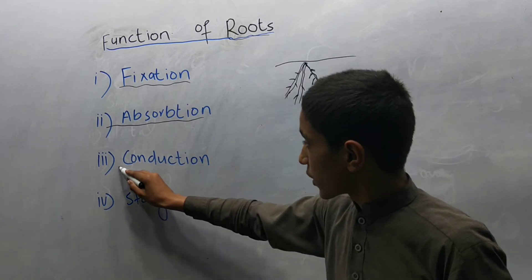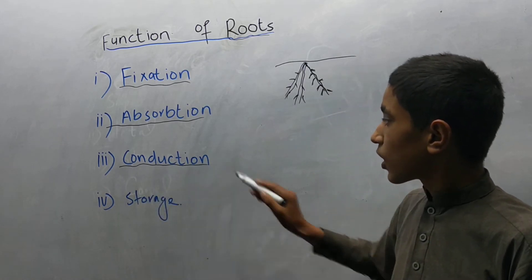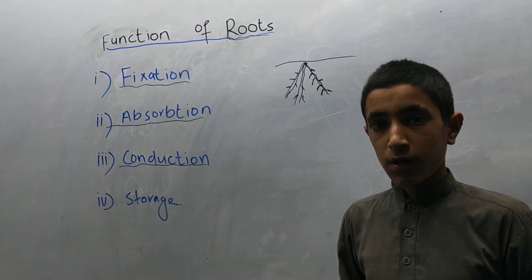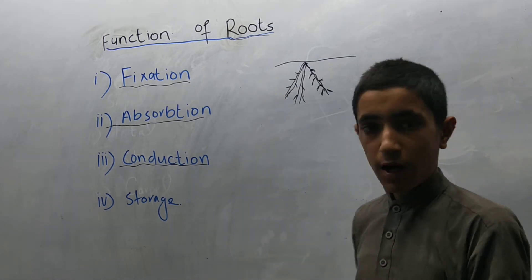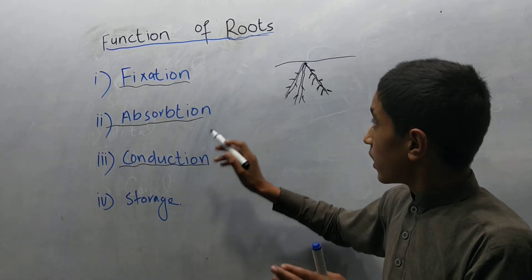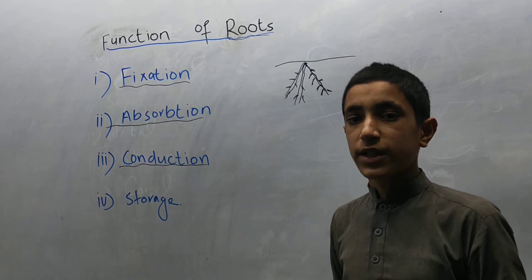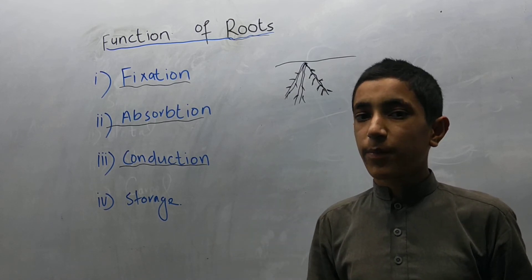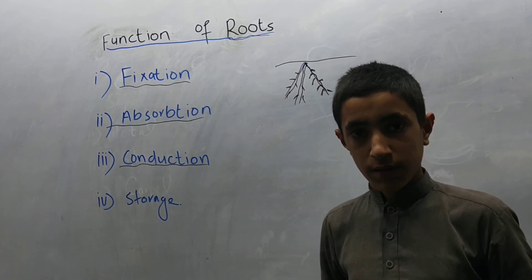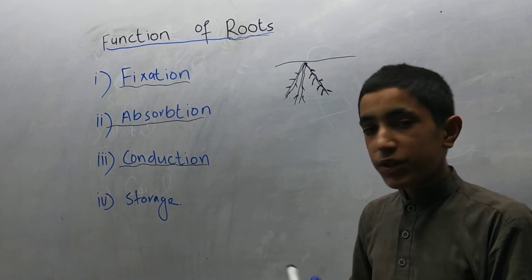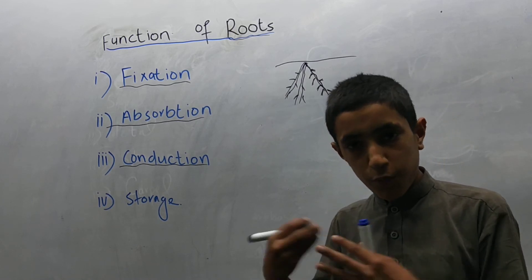The third function of the root is conduction. When a root absorbs water and minerals, then the root conducts them into the stem and then finally to the leaves. And leaves then prepare the food.